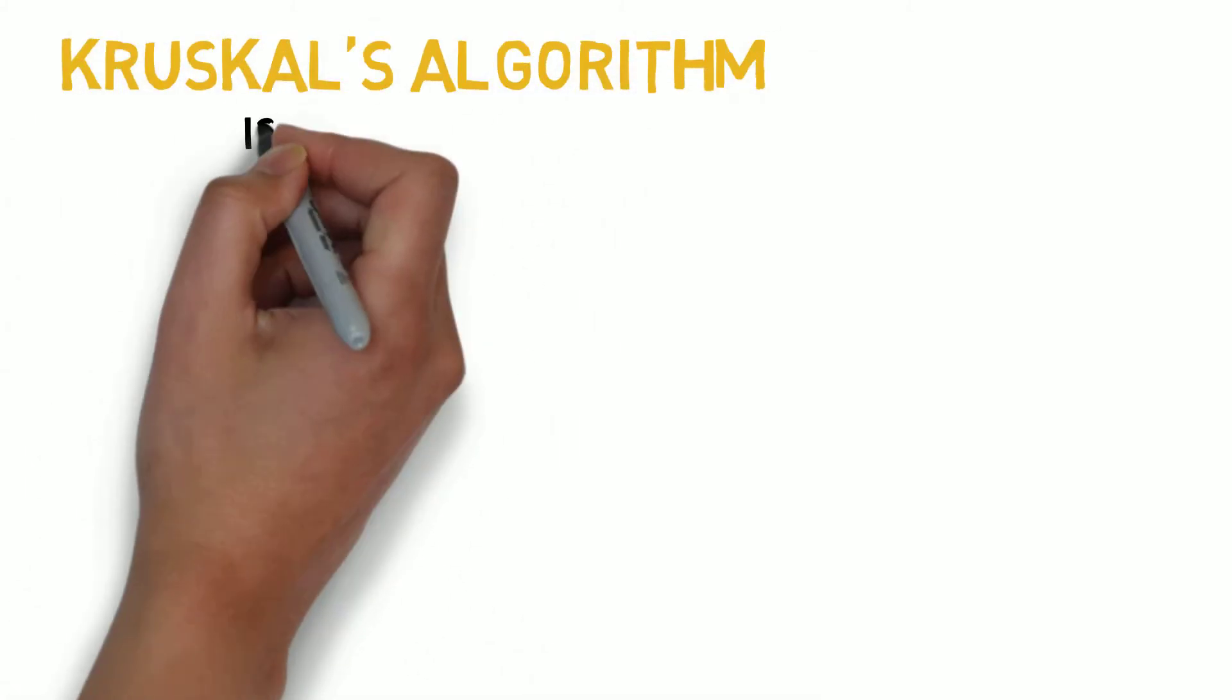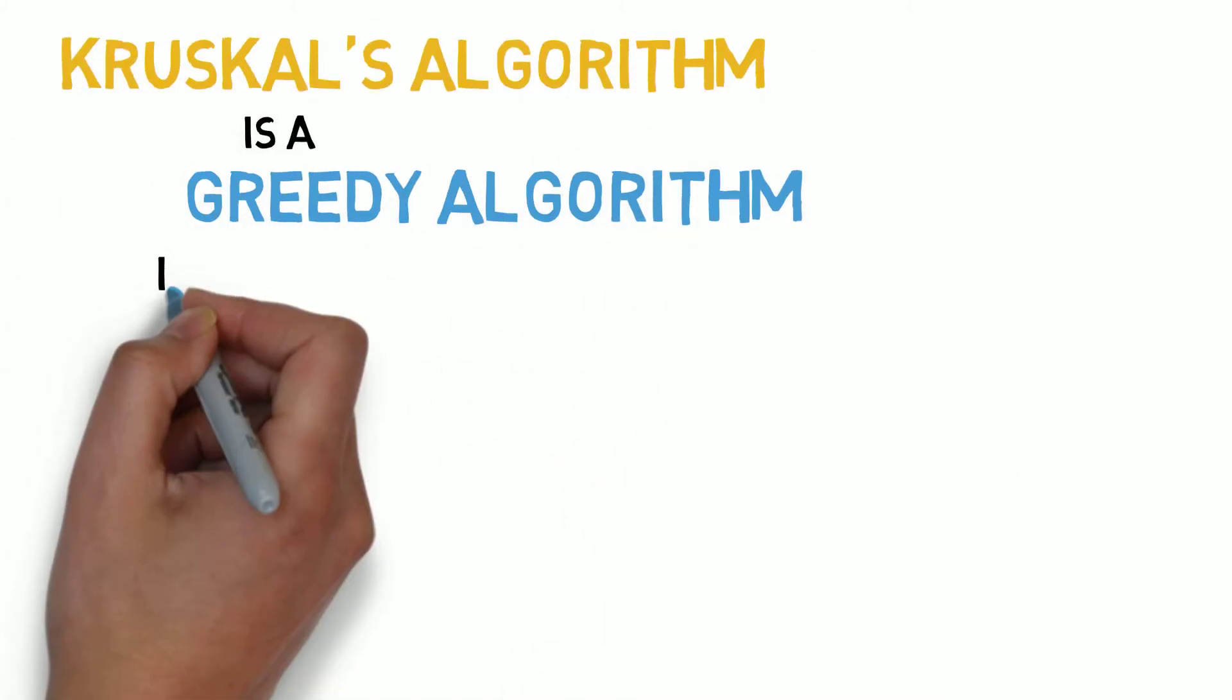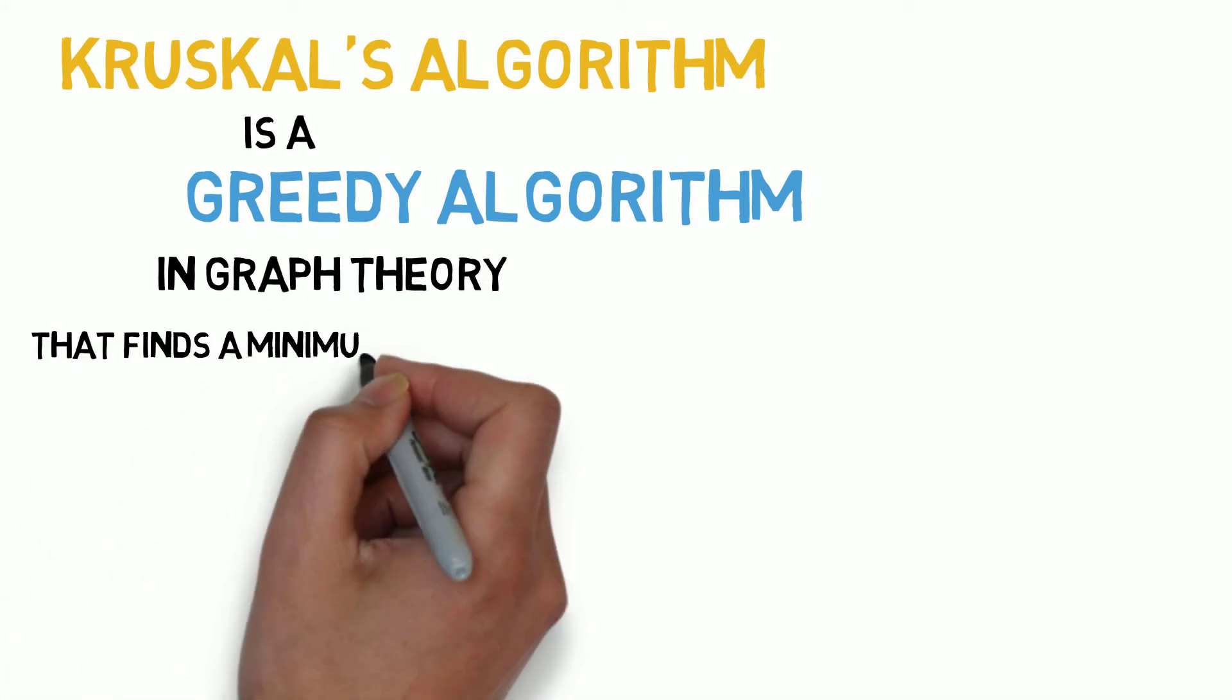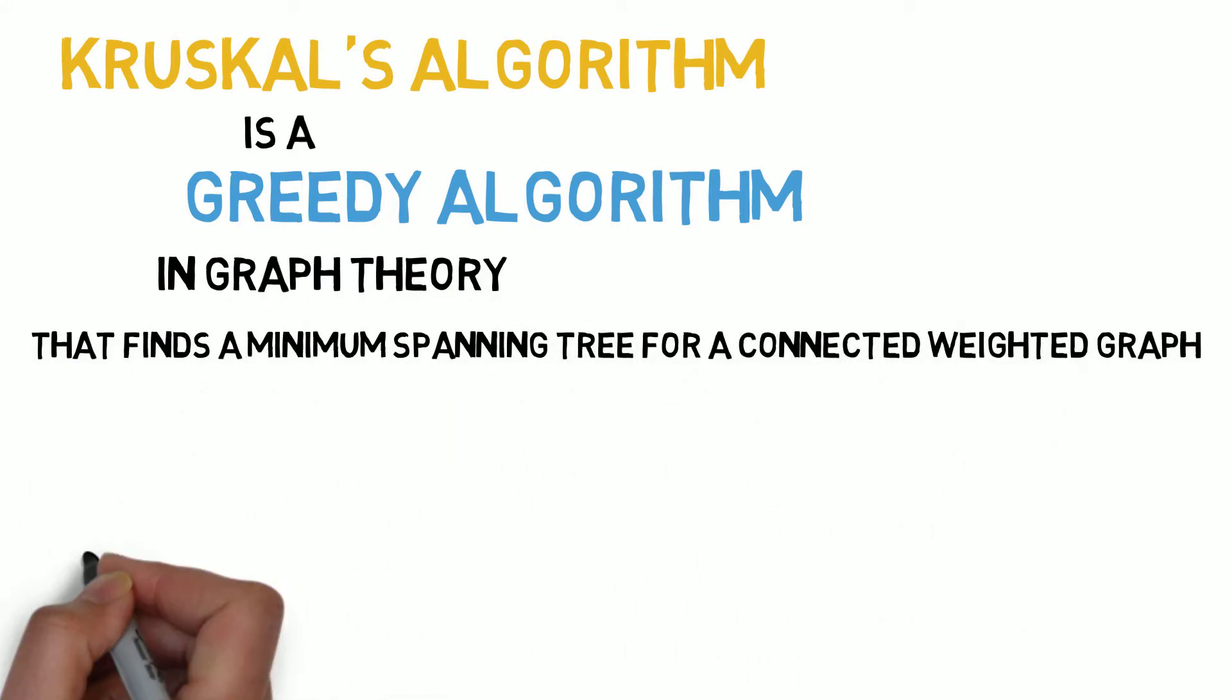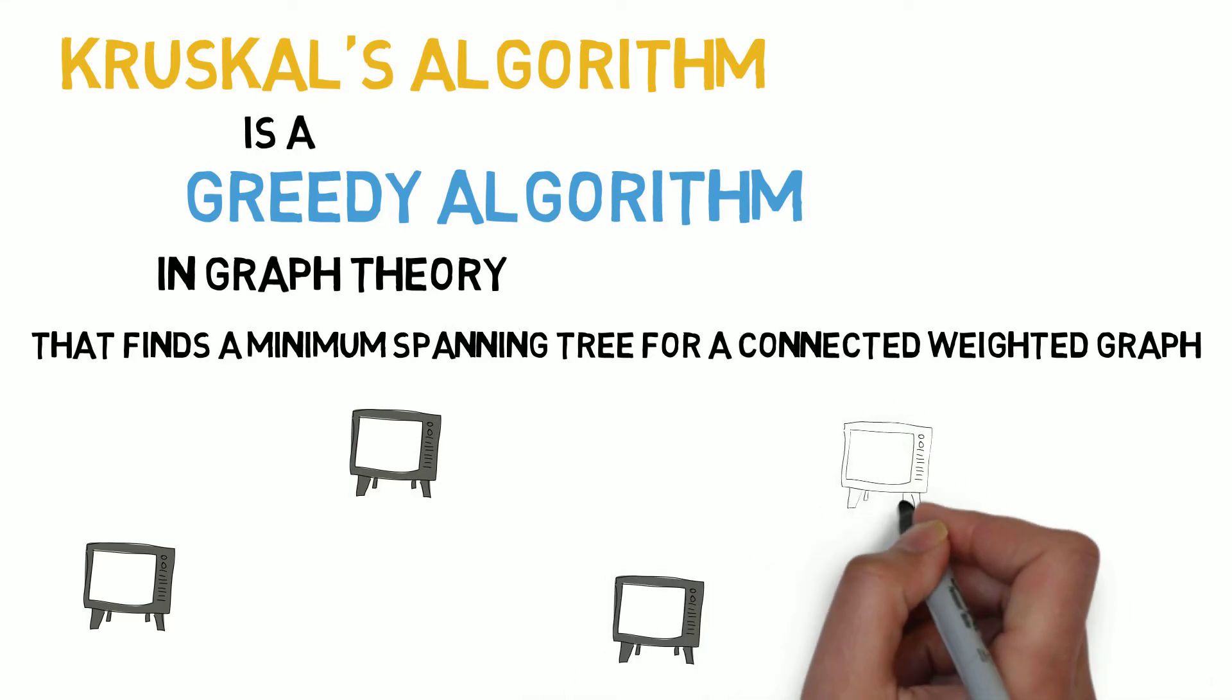Kruskal's algorithm is a greedy algorithm in graph theory that finds the minimum spanning tree for a connected weighted graph. This means it connects all vertices together without cycles and with the minimum possible total edge weight.